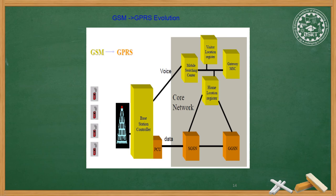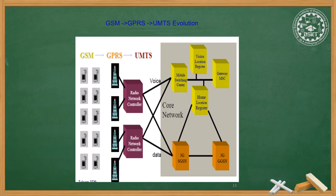This shows the evolution from GSM to GPRS. In the diagram, the Base Station Controller is connected to the Mobile Switching Center, VLR, Gateway MSC, and HLR, with voice and data transmitted simultaneously. The next diagram shows the full evolution from GSM to GPRS to UMTS. All mobile stations are connected to the Radio Network Controller, which in turn connects to the UMTS core network, where both voice and data are transmitted.